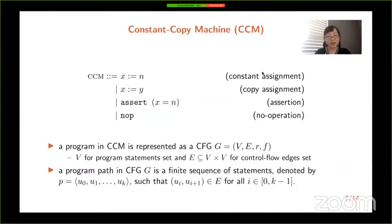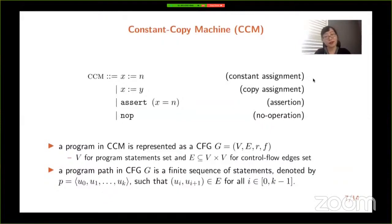Looking at the syntax of our CCM, a statement in a control flow graph can either be a constant assignment, a copy assignment, or an assertion, which is used to check whether variable x has a certain value n in a node. A statement can also be a no-operation semantics. A program path is a finite sequence of statements.